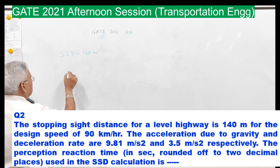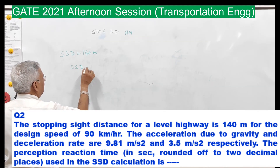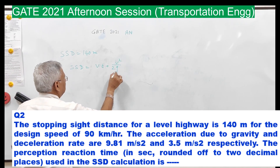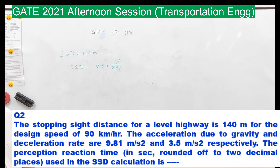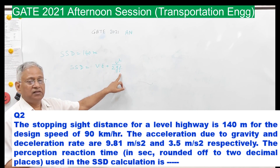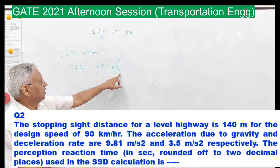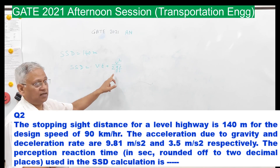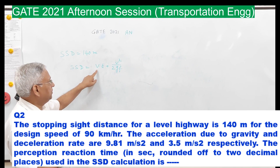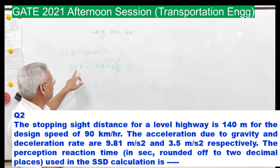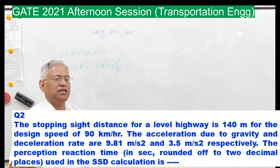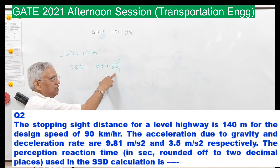In a normal case, SSD is given by the equation: V into T plus V squared upon 2GF. Here F, the friction, is not given, and therefore you have to go back to how this equation was derived. V is the speed, T is the reaction time, and SSD is 140 meters. You have to find out the T value. The SSD consists of lag distance and braking distance.